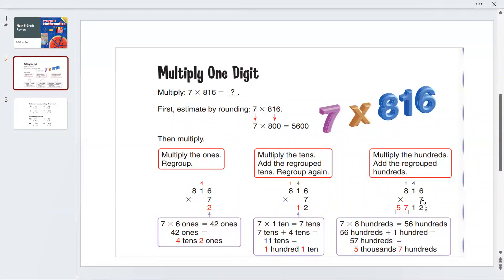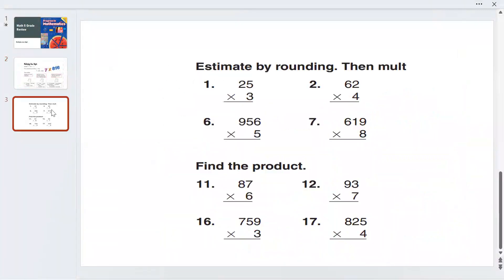Next we multiply 7 times 8. 7 times 8 is 56, plus 1 is 57 hundreds. 57 hundreds is 5,700, or 5 thousands and 7 hundreds. Now let's do some examples.